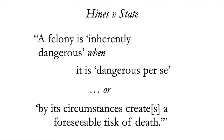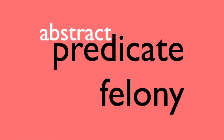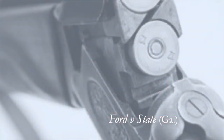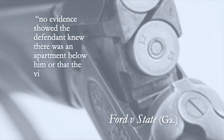The Georgia approach essentially combines the abstract and the facts-and-circumstances approaches. If the predicate felony is dangerous either way, a felony murder instruction goes to the jury. To affirm Hines' conviction, the court had to address a precedent case, Ford v. State. In that case, a convicted felon's firearm discharged while he was cleaning it, fatally injuring a downstairs neighbor, and the conviction under a felony murder instruction was reversed. The court distinguished Ford on the ground that no evidence showed the defendant knew there was an apartment below him or that the victim was present, whereas Hines knew others were in the vicinity.